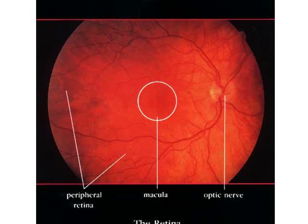This is a normal retina. Here you see the peripheral retina, macula, and the optic nerve.